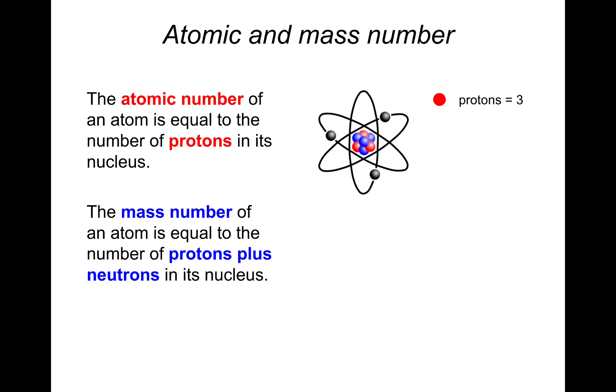So in the instance of the lithium atom that we looked at, there's three protons, four neutrons, and three electrons. Therefore the lithium atom will have an atomic number of three, because the atomic number is just the number of protons. A mass number of seven, because mass number is the total number of protons and neutrons.